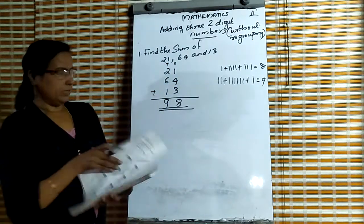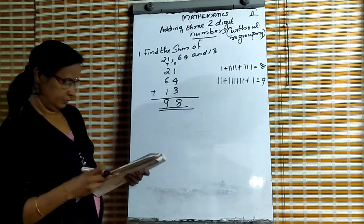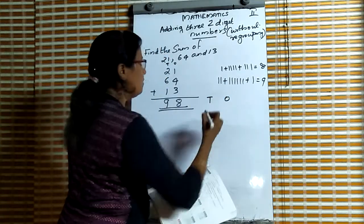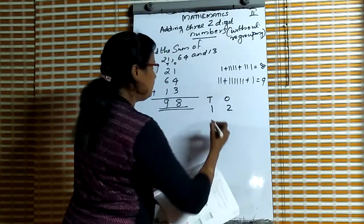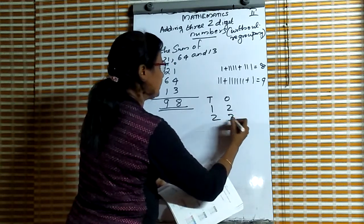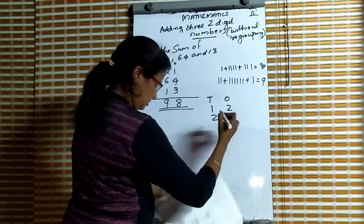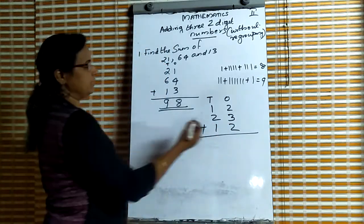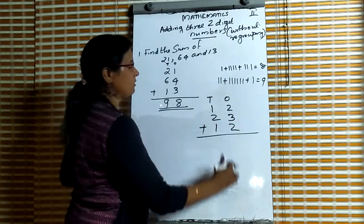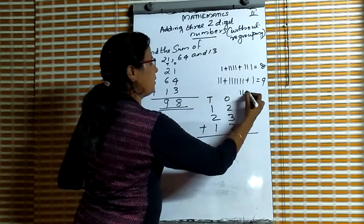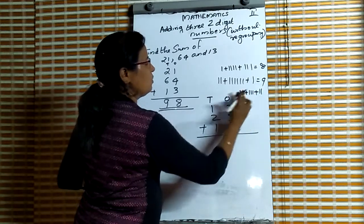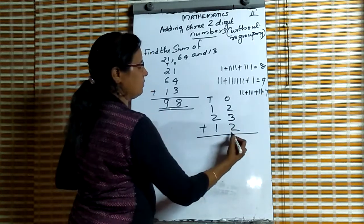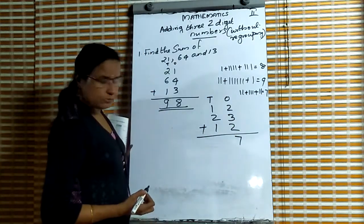Then next question: add 12, 23, and 12. First we add the digits in the ones place. In the ones place: 2 plus 3 plus 2. 2 plus 3 plus 2 is equal to 7.